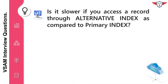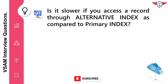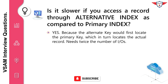Is it slower if you access a record through an alternative index as compared to a primary index? Yes, because the alternate key would first locate the primary key, which in turn locates the actual record. It needs twice the number of IOs.